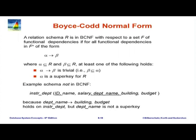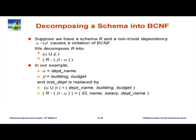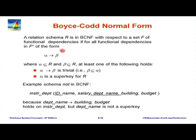We are going to do a lot of examples with this. Now how do you come up with a relation which is in BCNF? The basic approach is that we start with a universal relation or some other set of relations which we got from the ER model. We check if it is in BCNF. If it is not, we are going to decompose in a way that does not lose information.